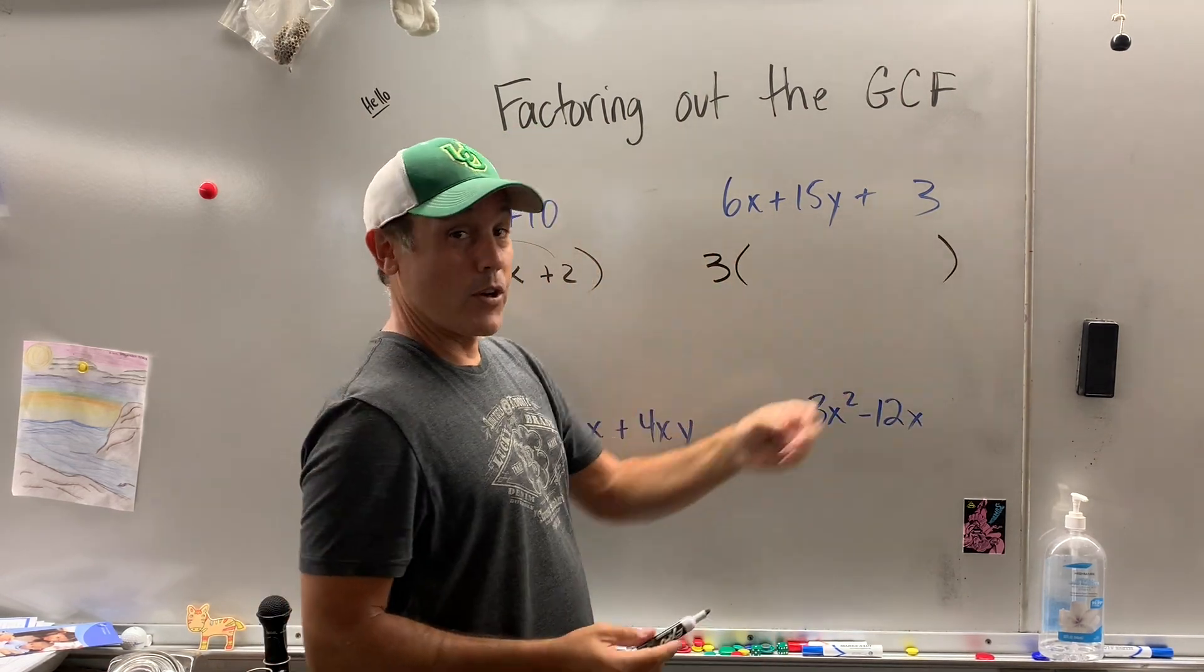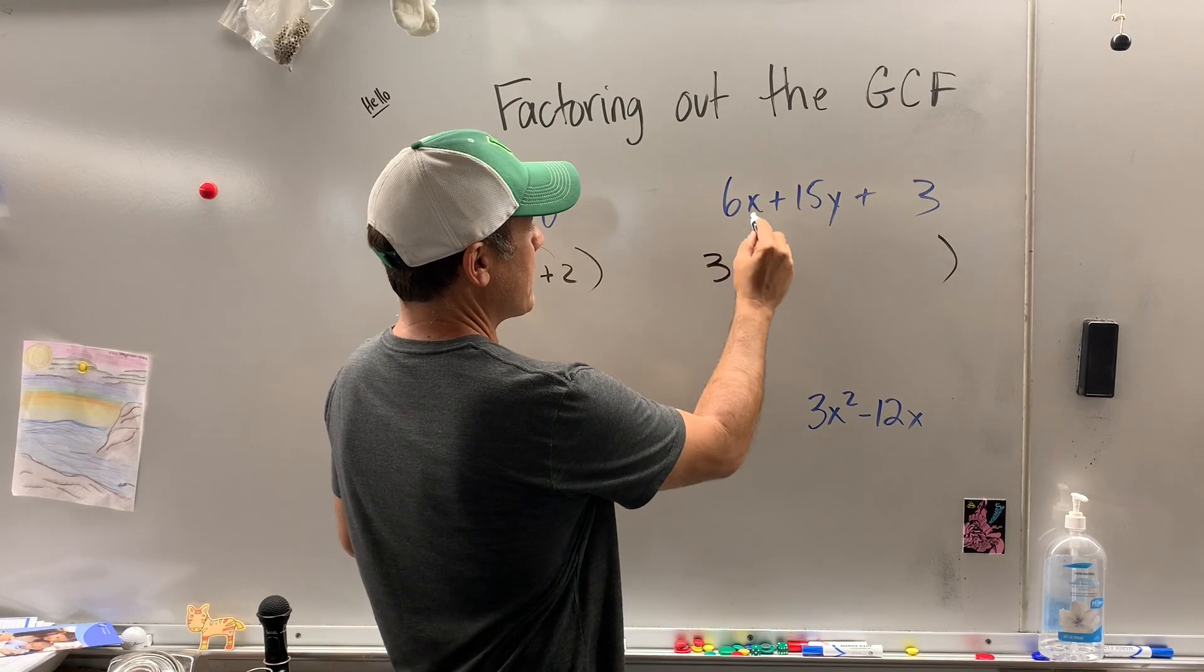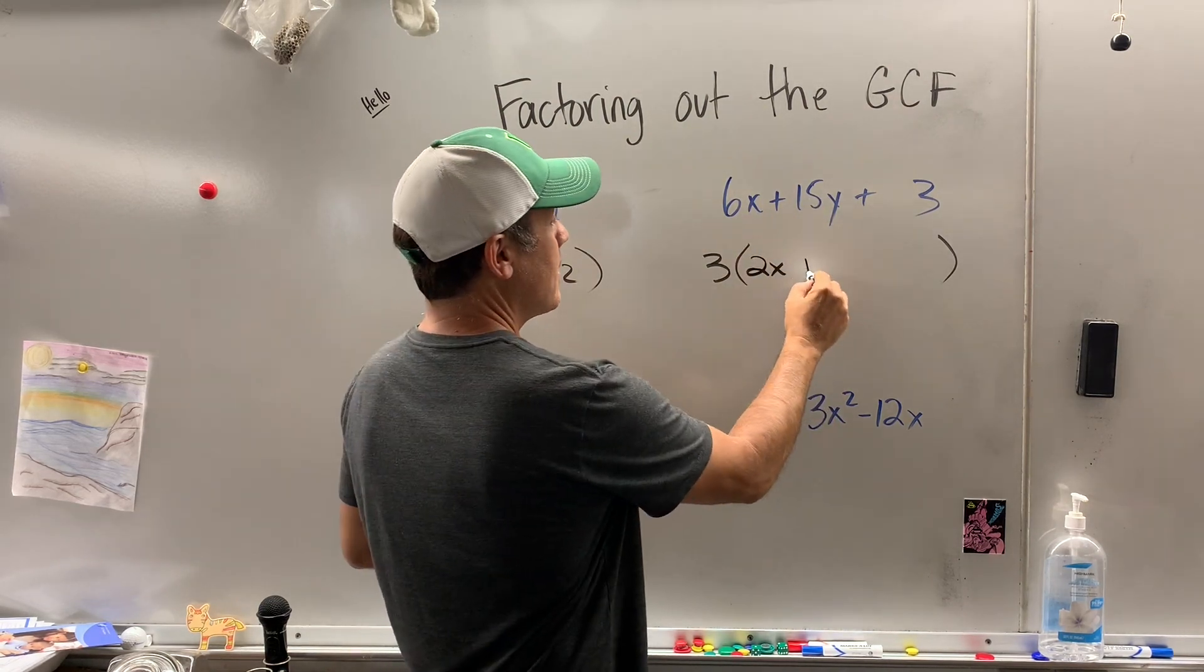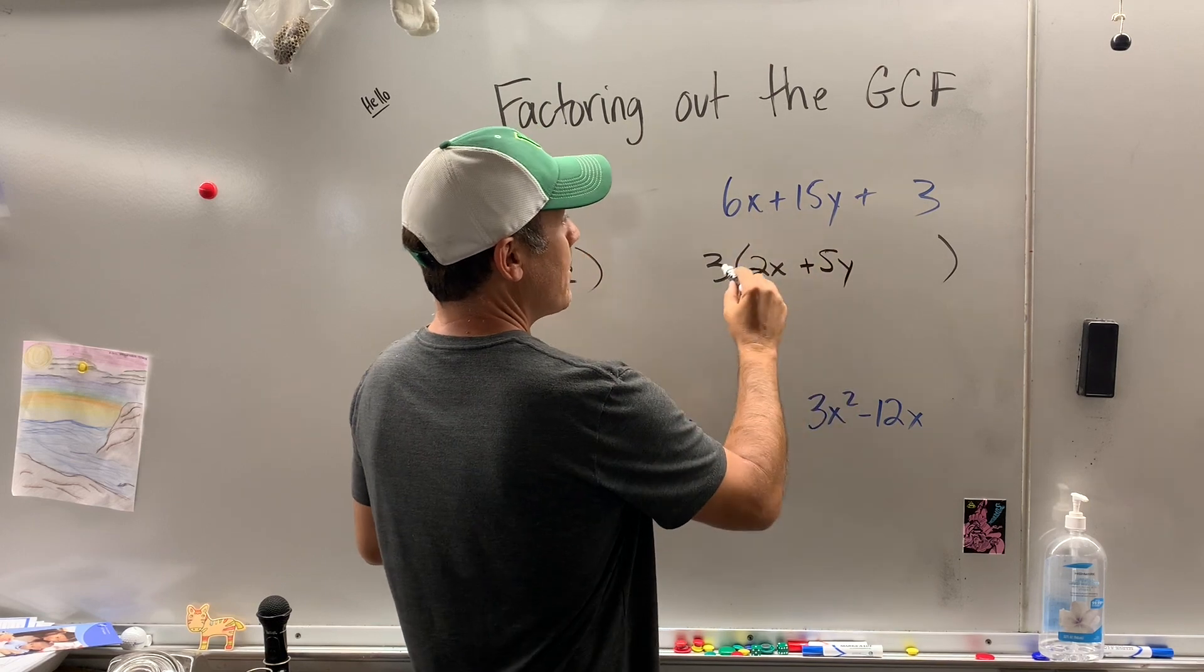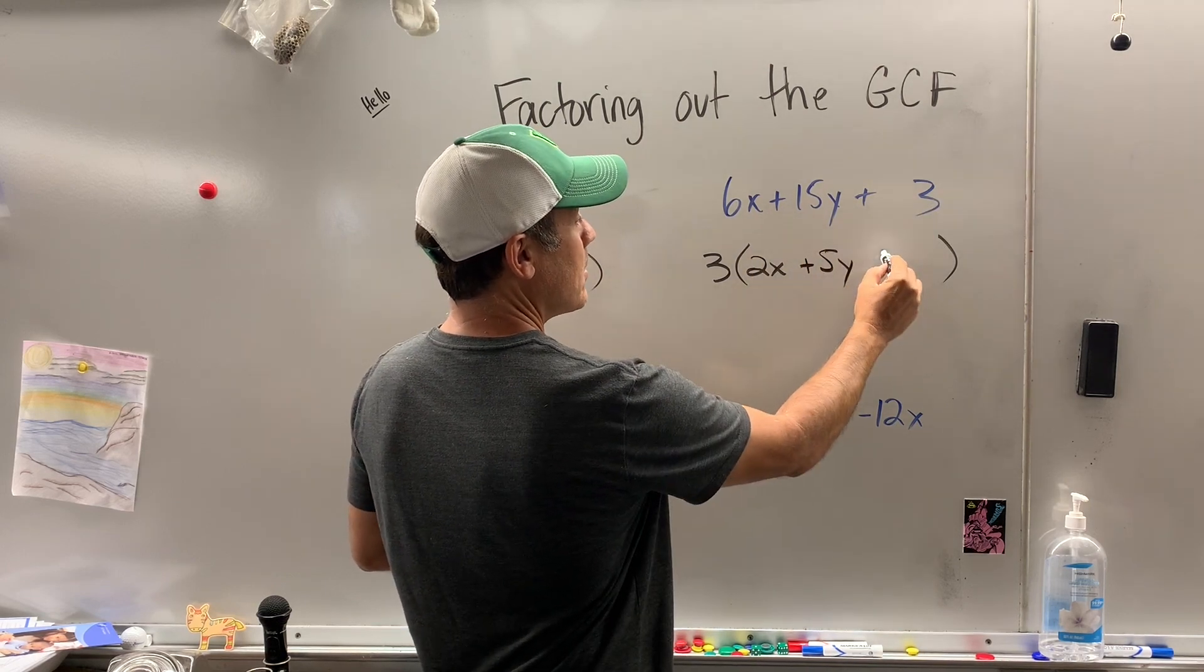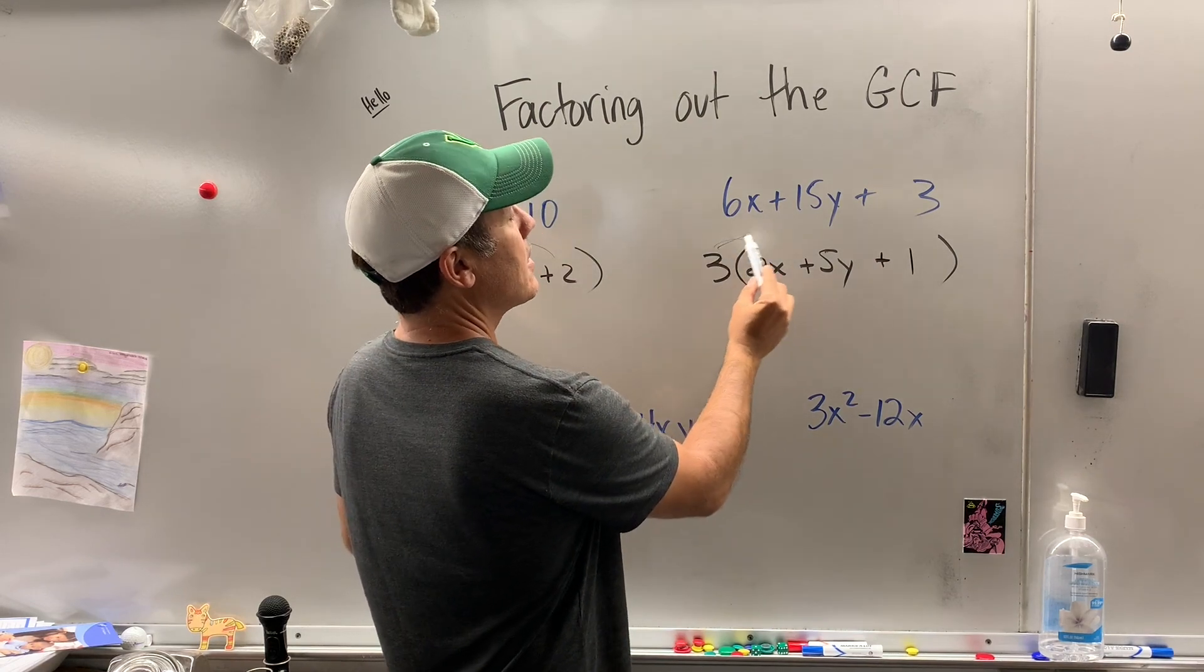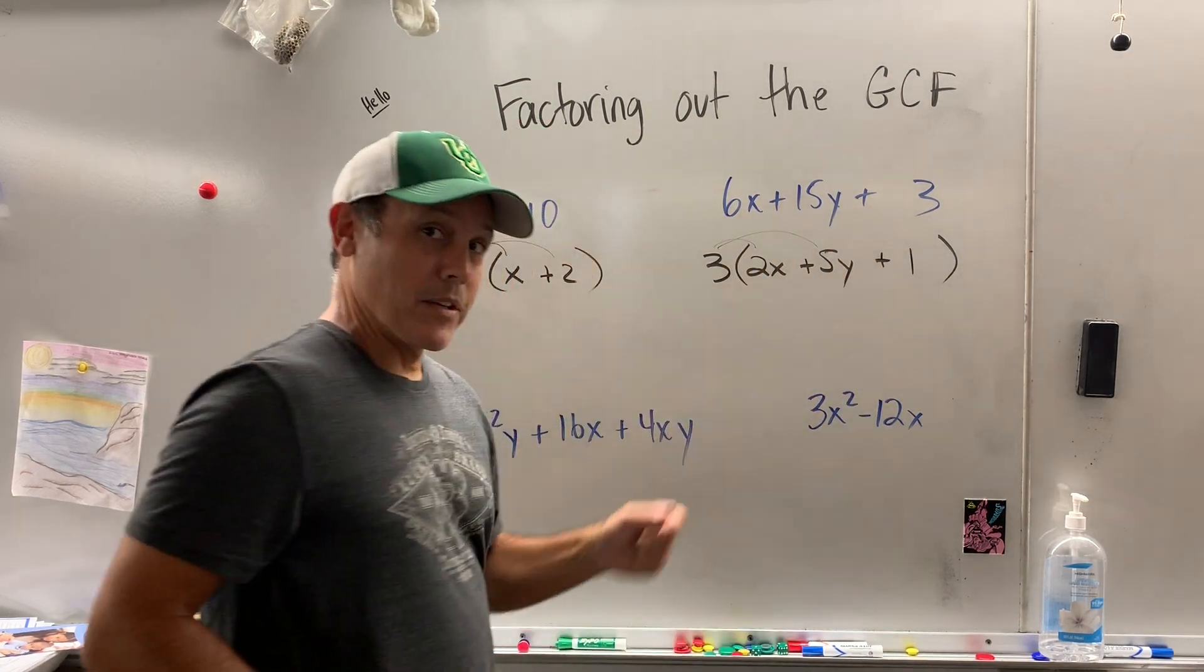Bigger parentheses because I've got a lot more going on. 3 times what is 6x? 2x. 3 times what is 15y? Plus 5y. 3 times what is 3? 1. You've got to put the 1 there. I'm going to double check in my head. 6x plus 15y, bingo.